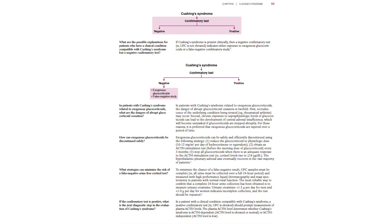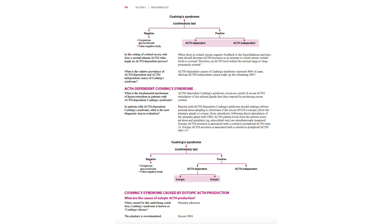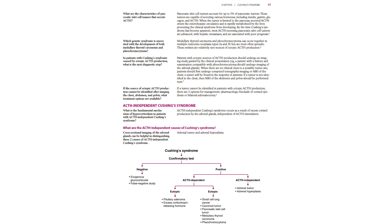The chapter continues to unfold, and the framework is beginning to assemble. When a patient presents with Cushing syndrome, we want to know: is it ACTH dependent or ACTH independent, which helps us narrow the differential diagnosis. This is how a skilled endocrinologist approaches a patient with this syndrome. And by the end of the chapter, the full framework is constructed.